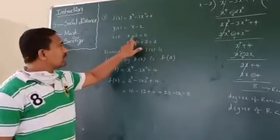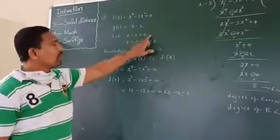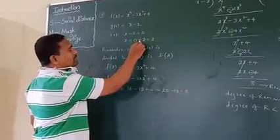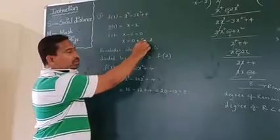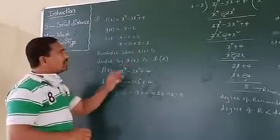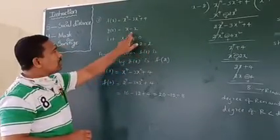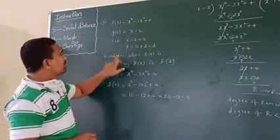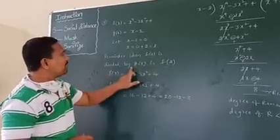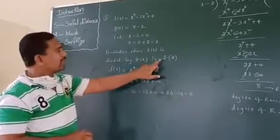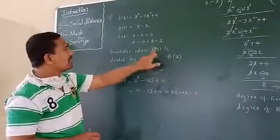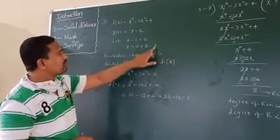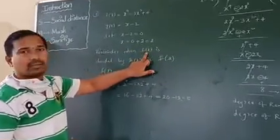Find x. Take minus 2 to the right-hand side — transposing gives plus 2. That is x equals 2. So 2 is the zero of the linear polynomial. The remainder when f of x is divided by g of x is f of 2 — whatever x value you got, substitute that x value in the given polynomial f of x.